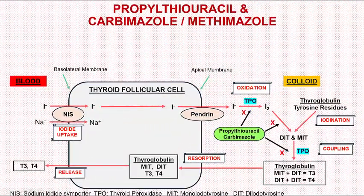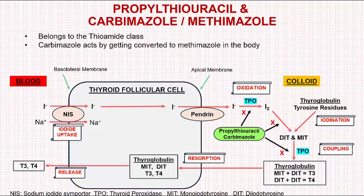In this video we will talk about the thyroid synthesis inhibitors propylthiouracil and carbamazole or methimazole. Both these thyroid synthesis inhibitors belong to the thioamide class. Carbamazole is converted in the body to the active compound methimazole. In some countries carbamazole is approved while in other places methimazole is approved.